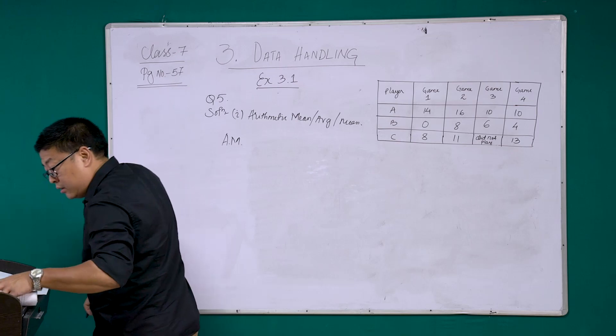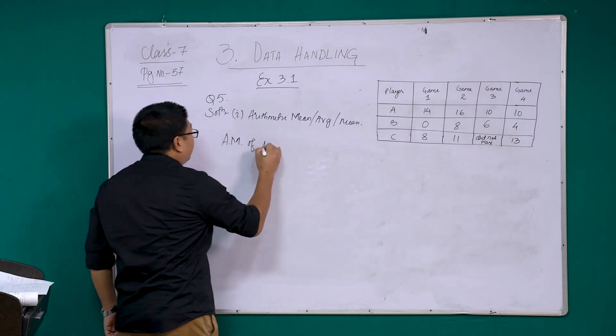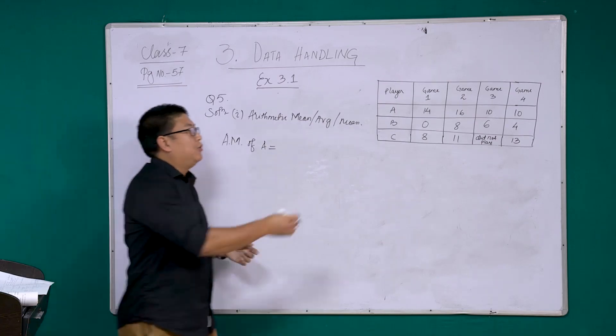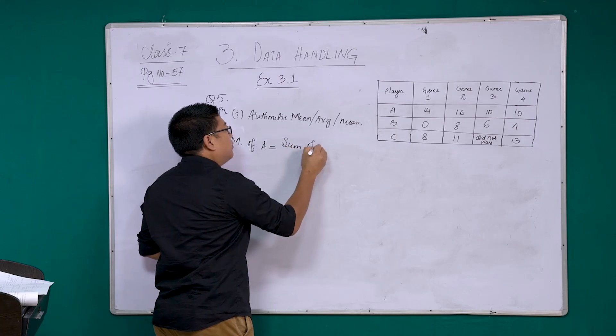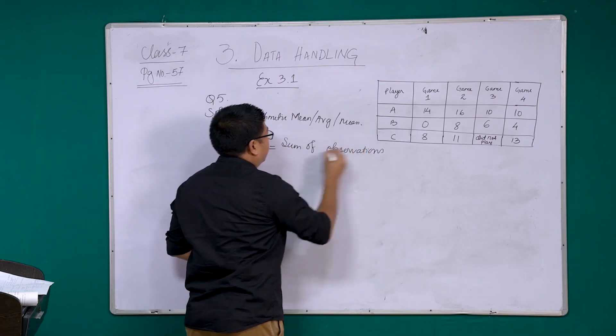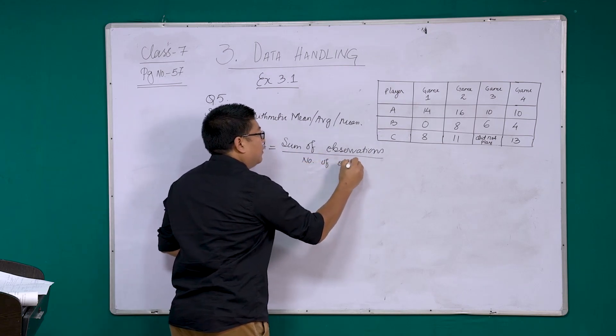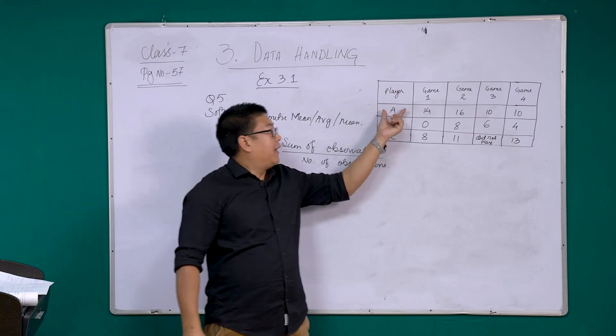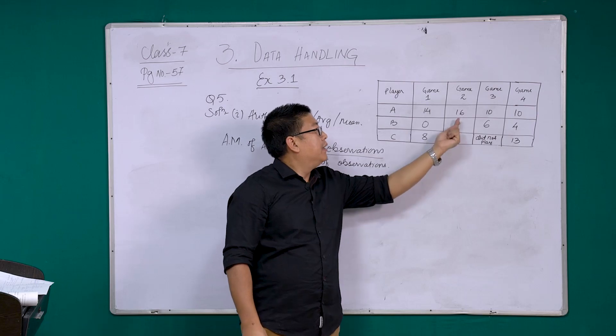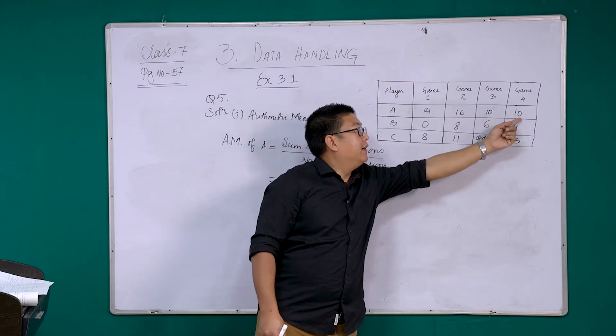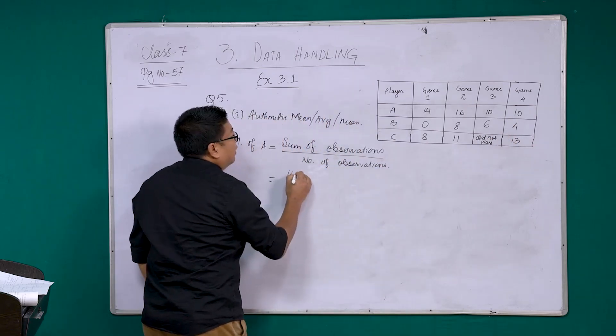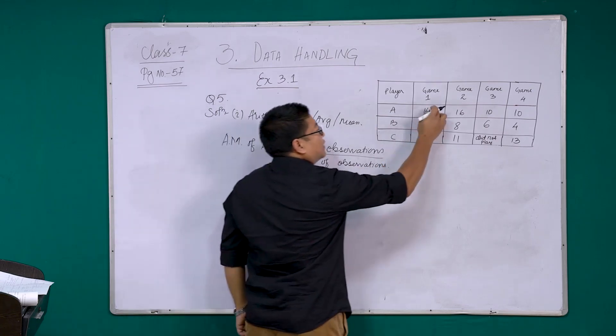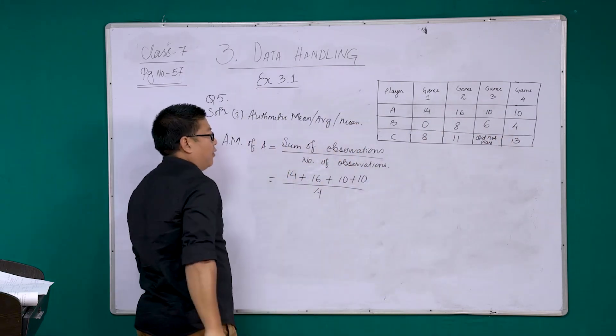So we already know the arithmetic mean is also called as average or mean. The formula for this is, we are going to find for A, so arithmetic mean of A. Arithmetic mean of A is nothing but sum of observations. Let's write down the formula first: sum of observations by number of observations. Now, the sum of observations of A. Let's look at A. A scored 14 in the first game, 16 in the second game, 10 in the third and 10 in the fourth.